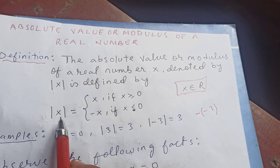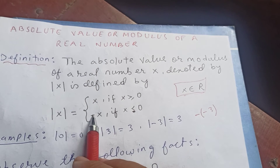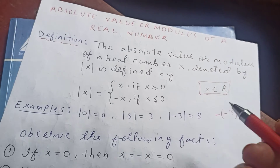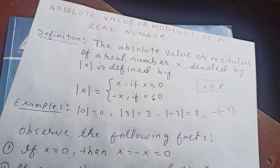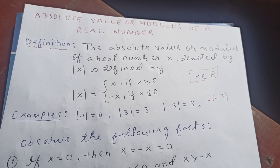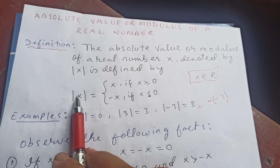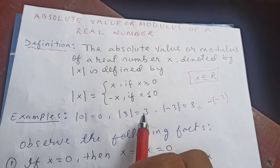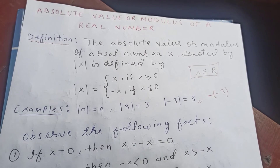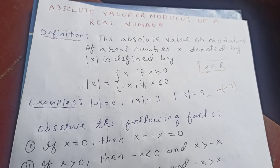Negative 3 is less than 0, so it will be negative times X, where X is negative 3. So negative times negative 3 becomes positive 3. In all cases, whether you put in a negative or positive number, the result of the modulus will always be positive. That's the first definition.